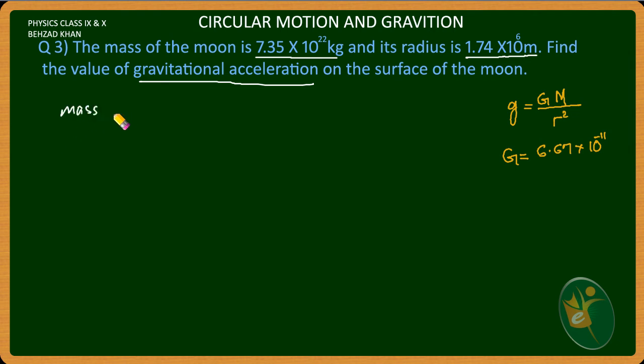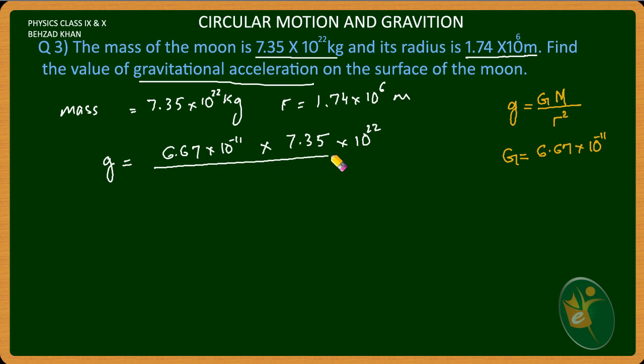g equals G times the mass of the moon, 7.35 × 10²², divided by the radius of the moon squared, which is (1.74 × 10⁶)².